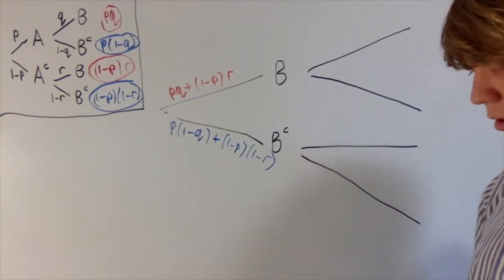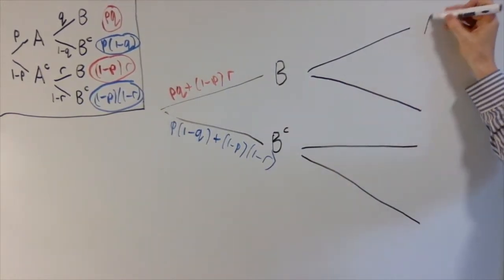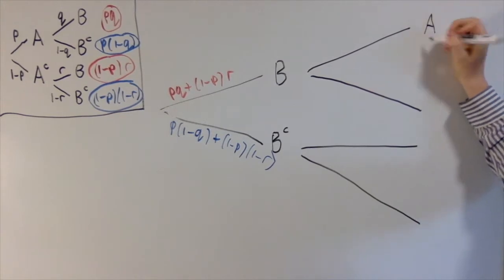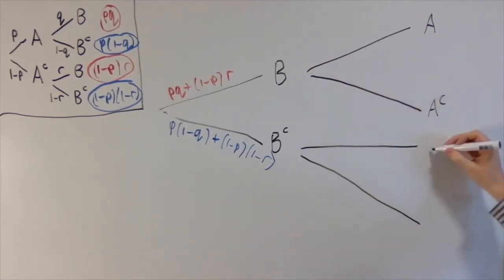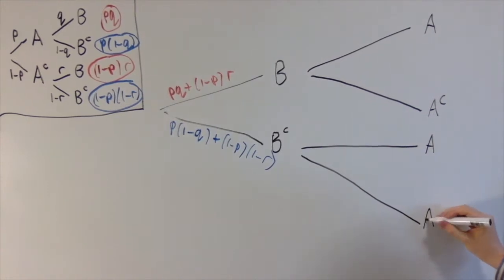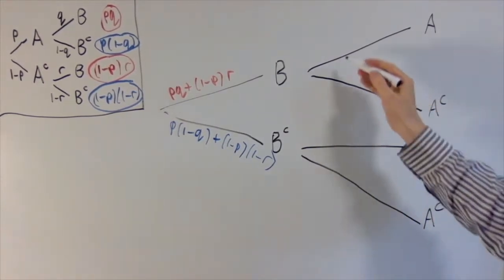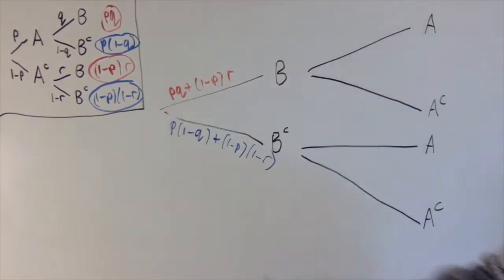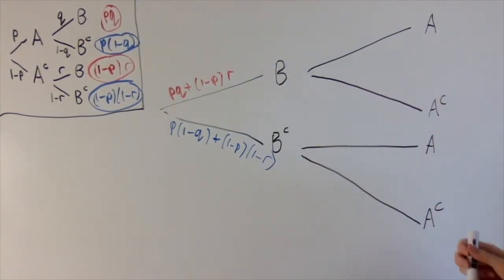That's fairly straightforward, but then we need to think about: if we're going to work out the probability of A happening after B happens, or A not happening — and the same where B hasn't happened — it's not immediately obvious how to just read this off from the diagram. So we'll put that to one side for now and come back to it later.